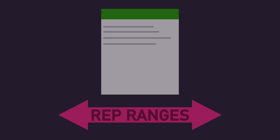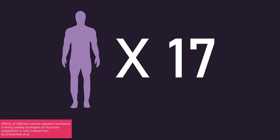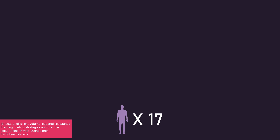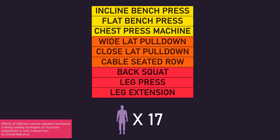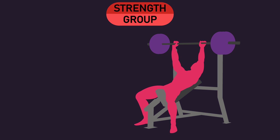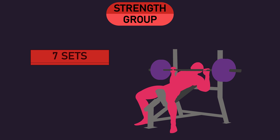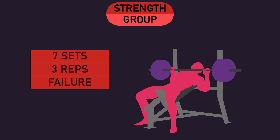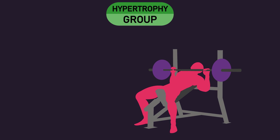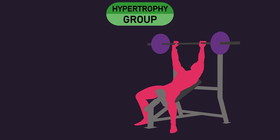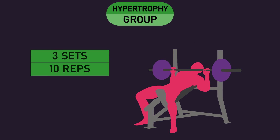One example comes from the research on rep ranges. Schoenfeld and colleagues had 17 men with at least one year of training experience perform a range of exercises. One group of subjects, who we'll call the strength group, performed each exercise for 7 sets of 3 repetitions to failure — the point at which no more repetitions can be performed. Another group of subjects, who we'll call the hypertrophy group, performed each exercise for 3 sets of 10 repetitions to failure.